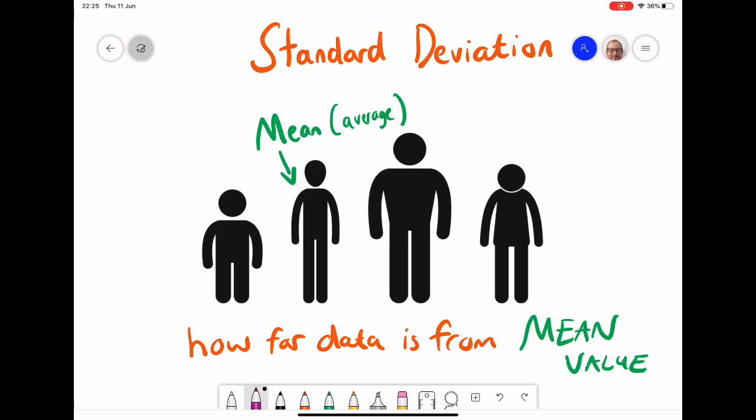Standard deviation is simply how far the data is from a mean value. In this picture here we're looking at people's height and I have labelled the person that is the mean height of this group of people.